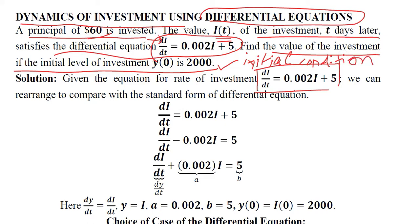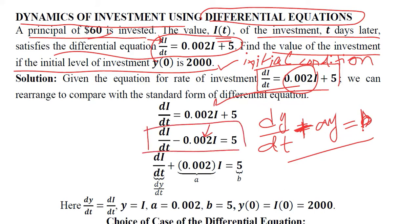Using this initial condition we can get to the definite solution. So we should remember the standard form. Here you can see only a constant is appearing on the right hand side. Here we have a variable term. So we should transfer it to the left hand side and now it is comparable with the standard form of the differential equation.